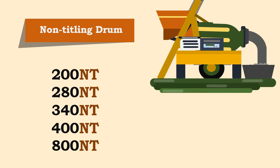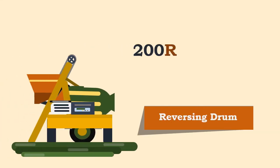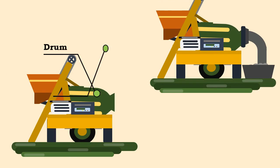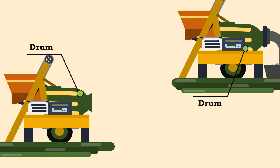Additional standard NT sizes are 400NT and 800NT. The reversing drum mixers are designated by a number representing their nominal mix batch capacity in liters, followed by 'R'. The standard sizes available in the market are 200R, 280R, 340R, and 400R.